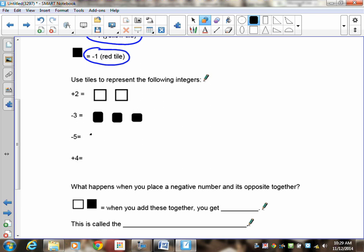Okay? Negative five is one, two, three, four, five. Positive four is one, two, three, four. There you go.